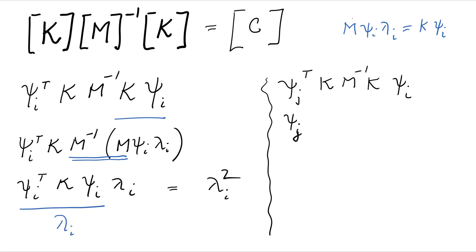Again, we can substitute for the mass matrix. So this becomes phi I lambda I by property of the eigenvalue problem. And then this becomes identity. And then we have phi J, there is a transpose here, phi J transpose, phi J transpose K phi I lambda I.